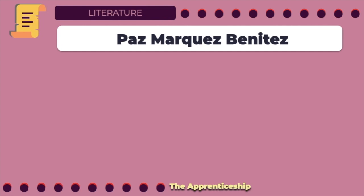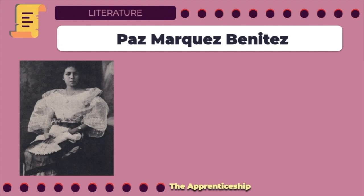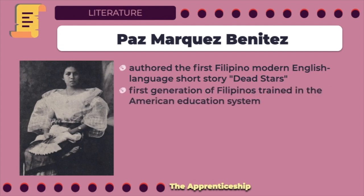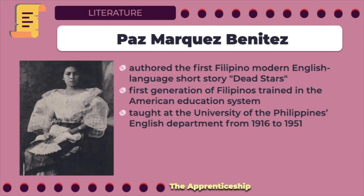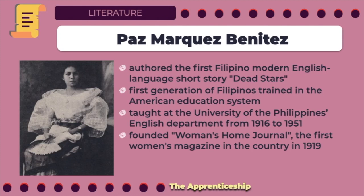The most significant short story produced during this period was Dead Stars by Paz Marquez Benitez. She authored the first Filipino modern English language short story, Dead Stars. She is a beloved mentor to the first generation of Filipino writers in English, and was among the first generation of Filipinos trained in the American educational system which used English as the medium of instruction. She taught at the University of the Philippines English Department from 1916 to 1951, acquiring a reputation as an outstanding teacher. In 1919, she founded Woman's Home Journal, the first women's magazine in the country. In 1928, she compiled Filipino Love Stories, reportedly the first anthology of Philippine stories in English by Filipinos, from the works of her students.